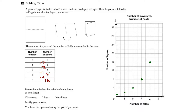Then we try to draw a smooth curve through these points. And if we do that, we can tell by the shape of this graph that this is non-linear. So it looks like the answer is that this is a non-linear relationship.